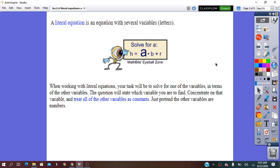A literal equation is an equation that has more than one variable. For example, here. The equals between the two sides makes us understand that this is an equation. In the left side, the variable h. In the other side, in the right side, we have